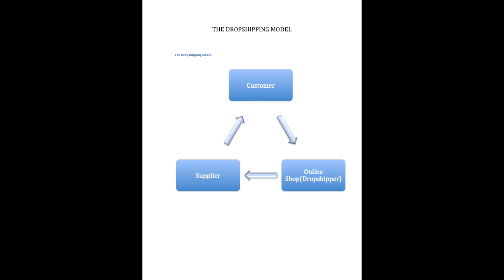Some of you are not knowledgeable about drop shipping or don't know what it is, and some of you know all about this, but let's talk about it real quick. Basically in the drop shipping model you have three different players or participants: the customer, the online shop or drop shipper, and the supplier. The customer is looking for a product, they're searching for it on your online shop, and they purchase that directly from your online shop — as you can see in the arrow on the right of the screen.